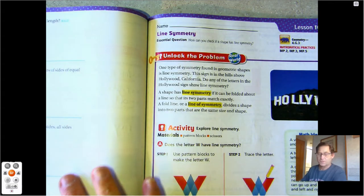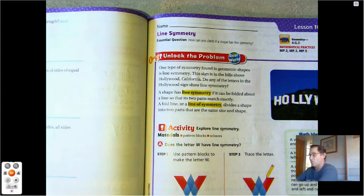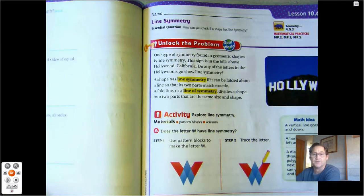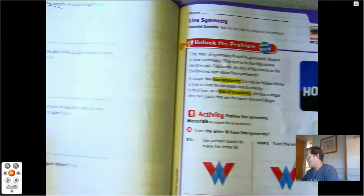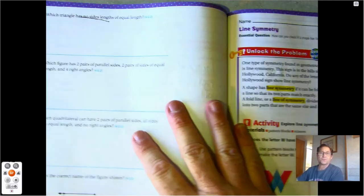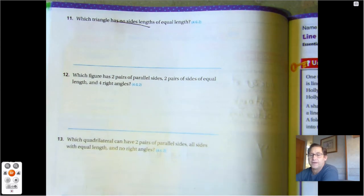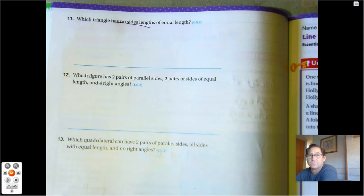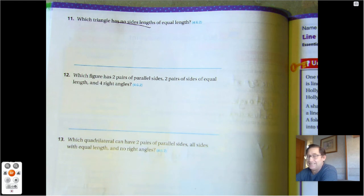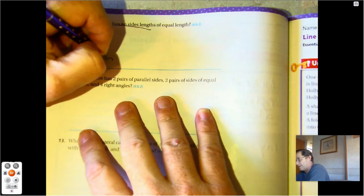420. Which triangle has no sides of equal length? Well, remember there's three names for triangles. We can have an equilateral triangle—that means all sides equal. We can have an isosceles triangle—that means two of the sides are equal. And scalene—no sides are equal.